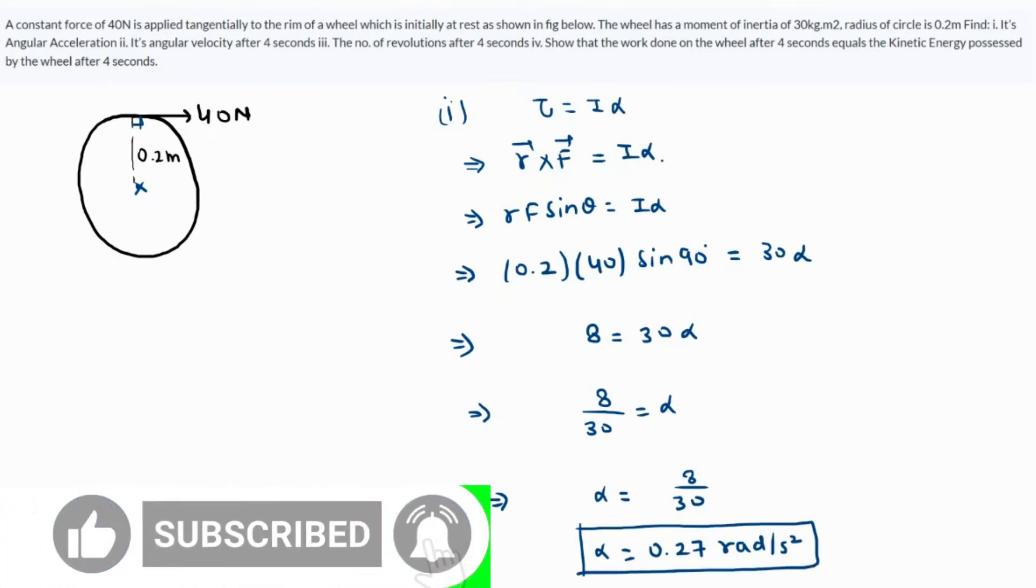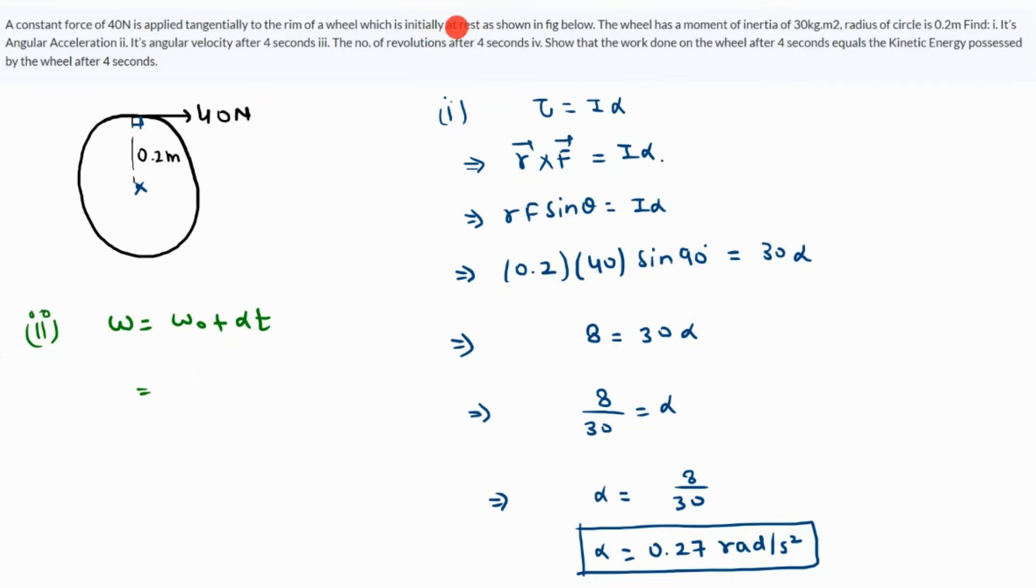In part 2, they're asking what is the angular velocity after 4 seconds. That's where the equations of kinematics come in, applied for the rotation part. We can use ω = ω₀ + αt. ω₀ is the initial angular velocity, and since it starts from rest, it's given as 0. α is the angular acceleration which we just found as 0.27.